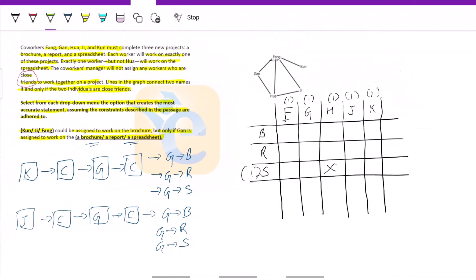So let us put K first. K could be assigned to brochure. So if he's assigned on brochure, then he cannot be assigned anywhere else. Only if G is assigned to work on - now, when K is assigned on brochure, F cannot be assigned on brochure because he is its close friend. This is the only condition. Now we have to put G with respect to brochure. G is here. Then H cannot be here and F cannot be here. Already not there. Cool, no worries.